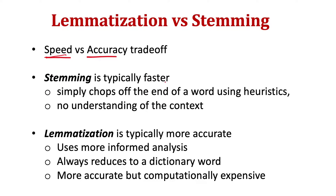Stemming is faster because it simply chops off the end of the word. It does not understand the proper context in which the word was used — it uses heuristics and does not truly understand context. That's why it's faster, but it is prone to errors such as over-stemming and under-stemming, where words belonging to different roots may be reduced to the same word, and vice versa. Lemmatization, on the other hand, is more accurate.